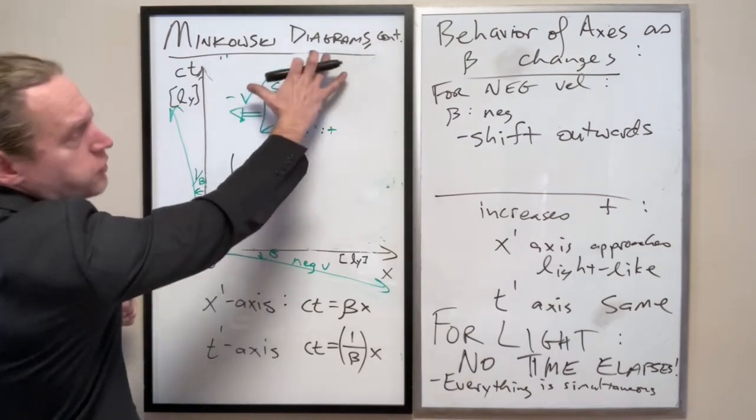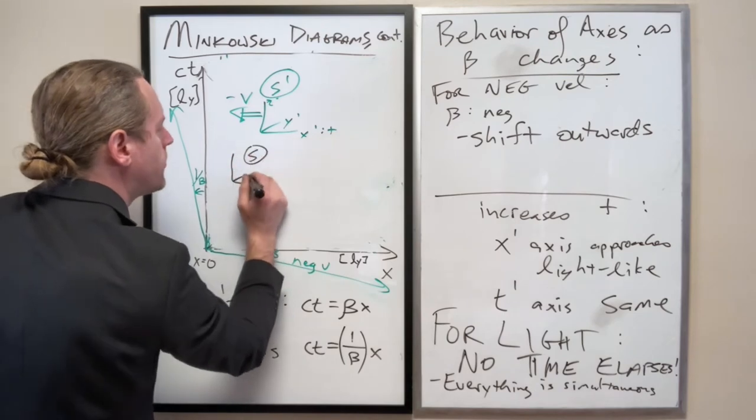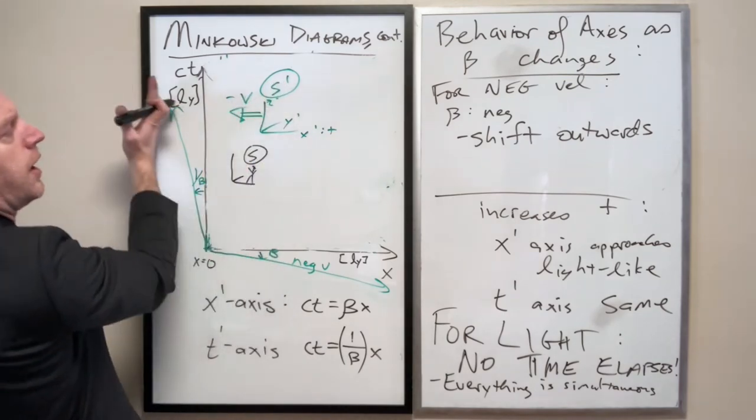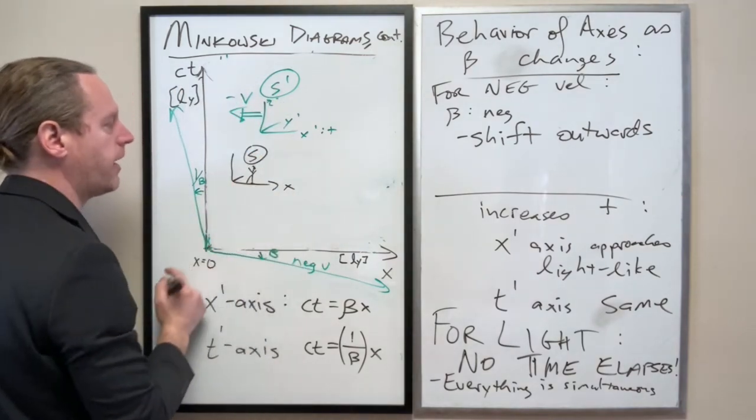And then the s-observer, for example, would just say is stationary below them. So don't get that confused with the Minkowski diagram. This is a little sketch-up of what's happening. Here is the observer in s. It's stationary. They're seeing the observer in s-prime going by at negative v along both of their x or x-prime axes.